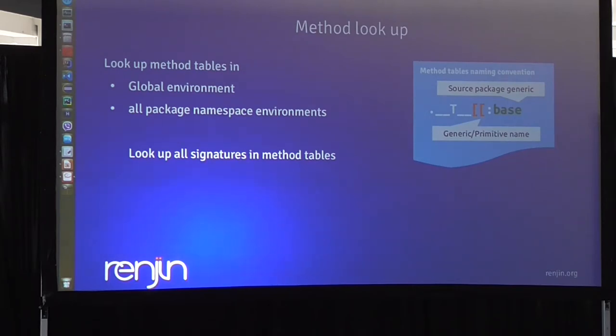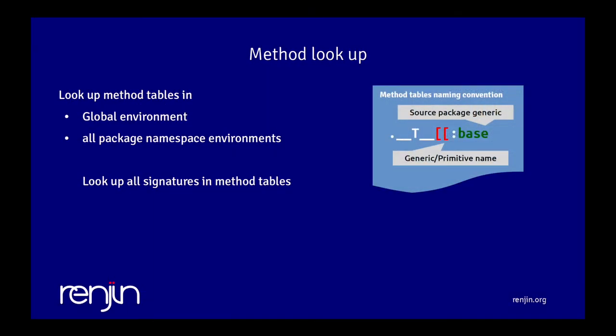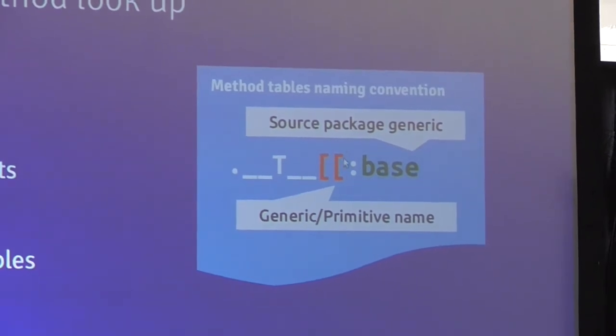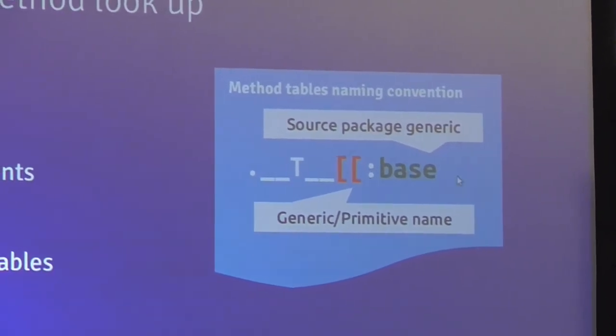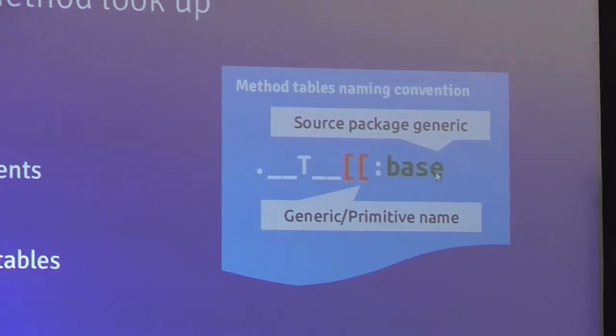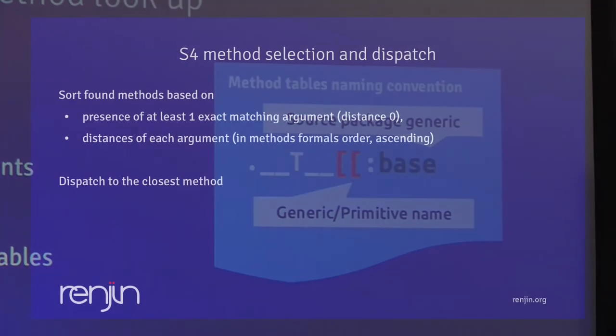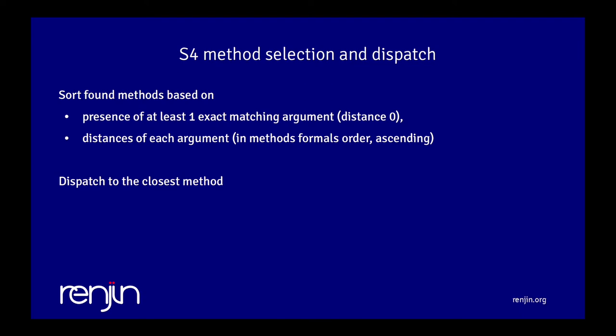The method tables are basically environments that contain these methods, and they are named. If you want to see them, you have to do ls all.names=TRUE because otherwise they are hidden. They start with dot underscore underscore T underscore underscore, the name of generic function, a colon and then the name of the package where the generic function was defined. For primitives it will always be the base package.